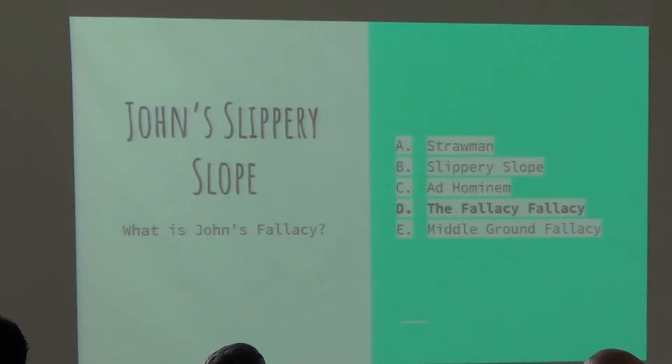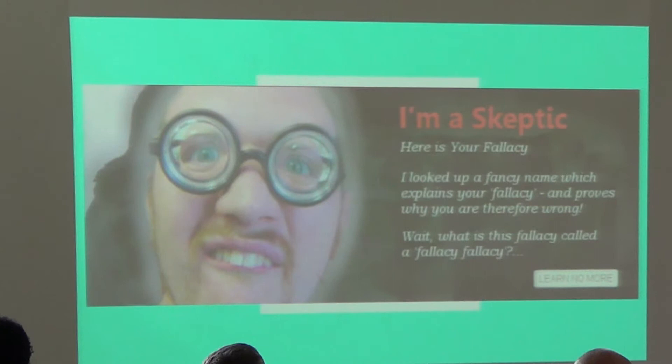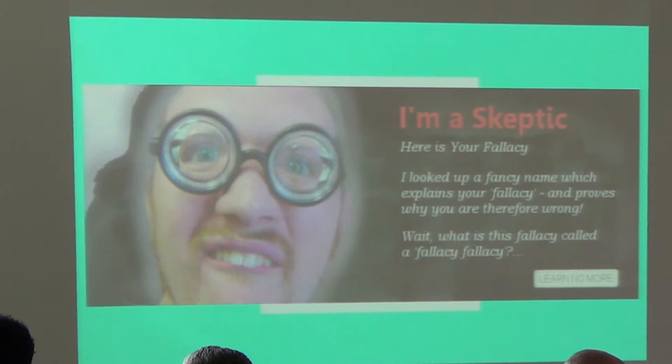Ad hominem is just a personal attack. John did call Jane stupid, but he didn't base his reasoning for driving on that — he based it on the claim that she committed the slippery slope fallacy. The fallacy fallacy is when you mistakenly conclude that someone's conclusion is wrong simply because they used a fallacy to argue it. Don't be this person — they may have reached the right conclusion even if they argued it poorly. So it's best to make sure they're using other reasons to get to their conclusion.